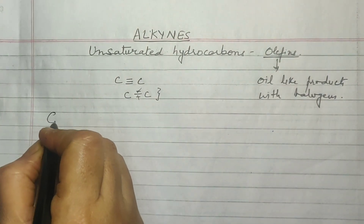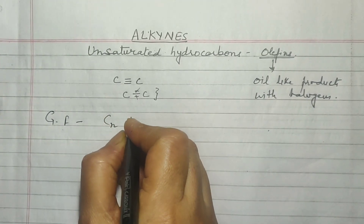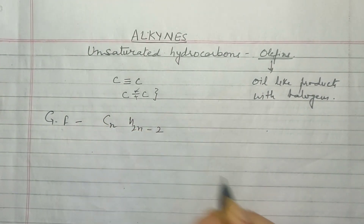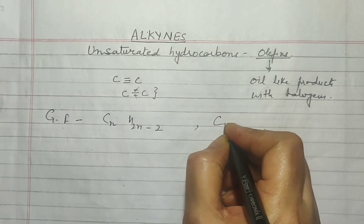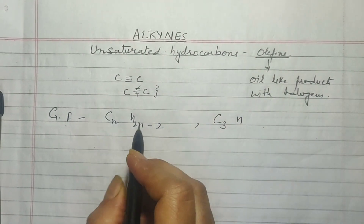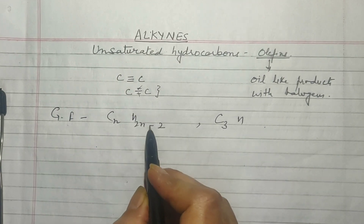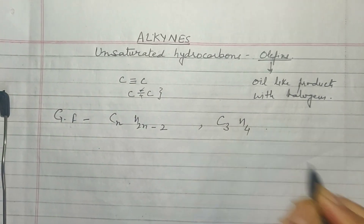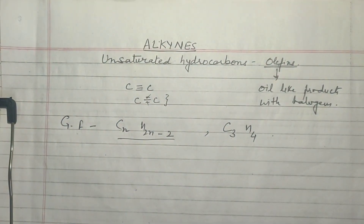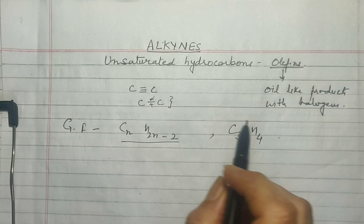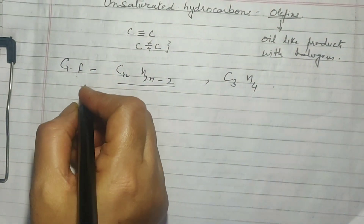The general formula of all Alkynes is CnH2n-2. That means if you know the number of carbon atoms — say 3 — the hydrogen atoms will be twice the number of carbon atoms: 3×2 = 6, minus 2 = 4. So the moment you see this formula in a hydrocarbon, you know it is an alkyne.